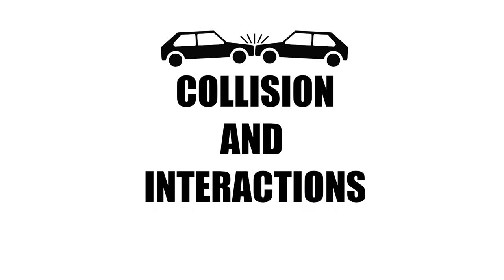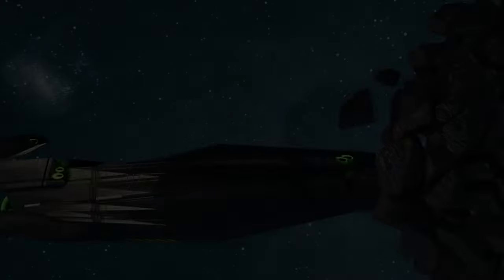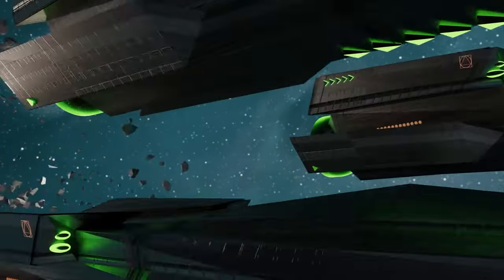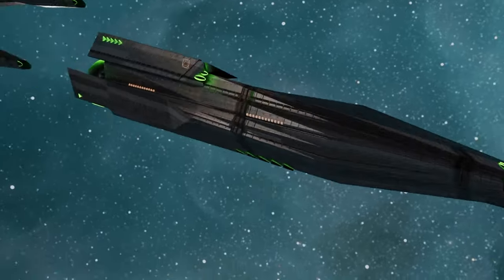Collision and Interaction. Collision and interaction between objects are another crucial aspect of game physics. These interactions determine how objects react when they collide or come in contact with each other.